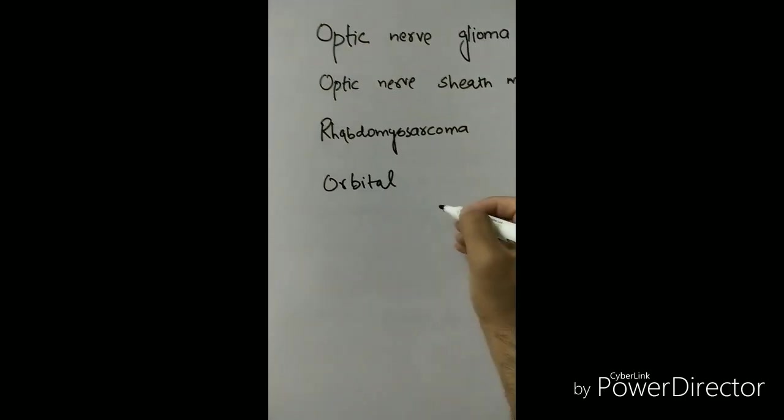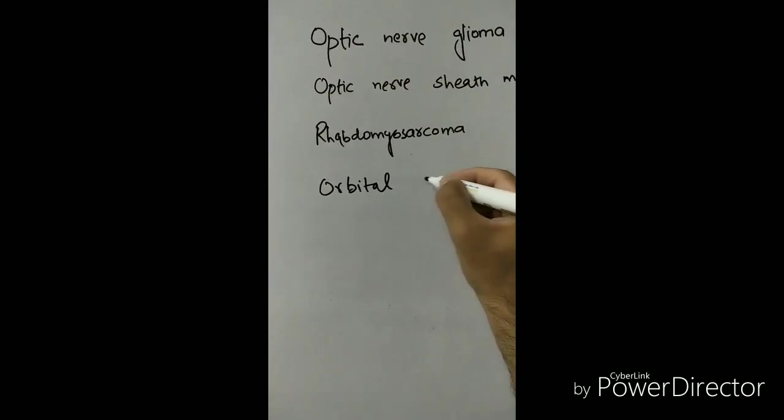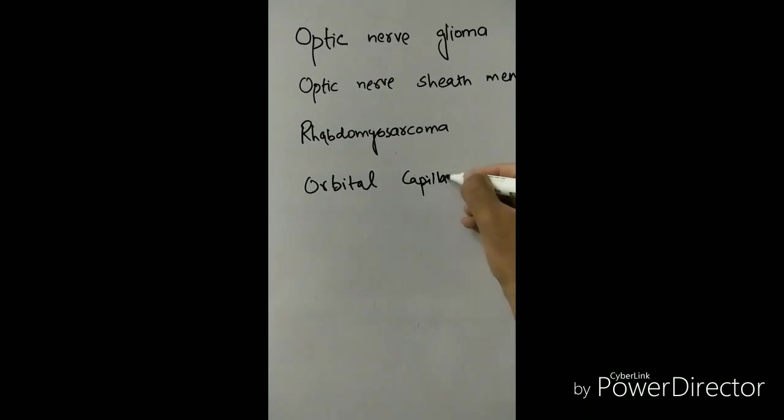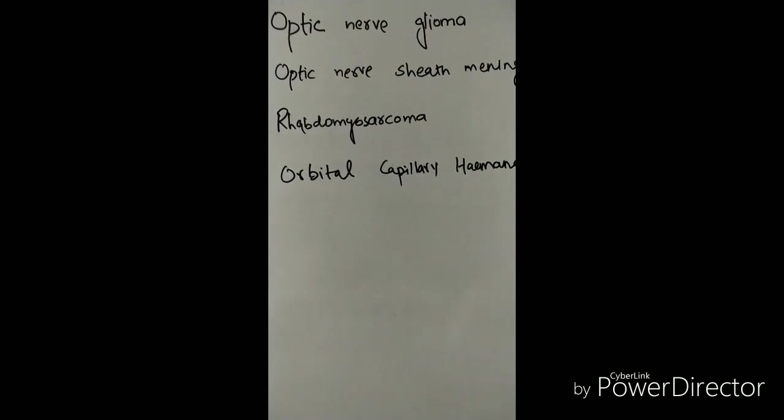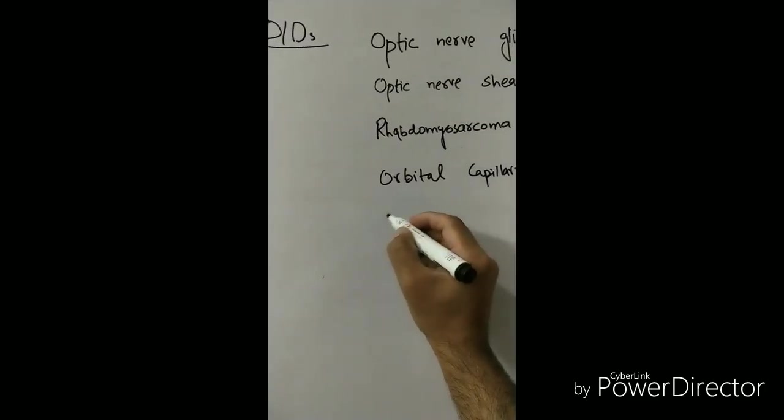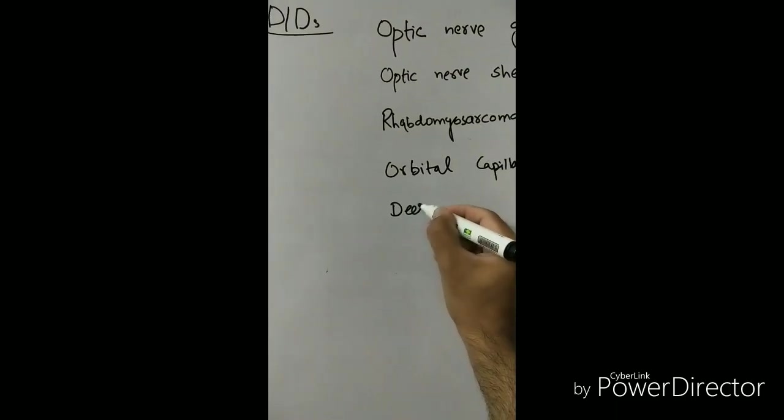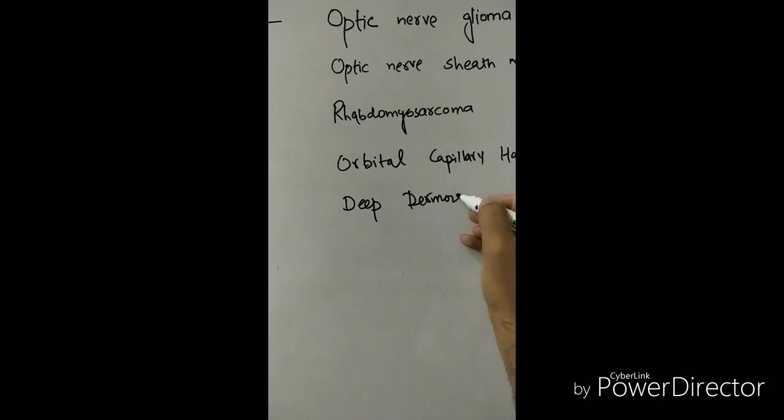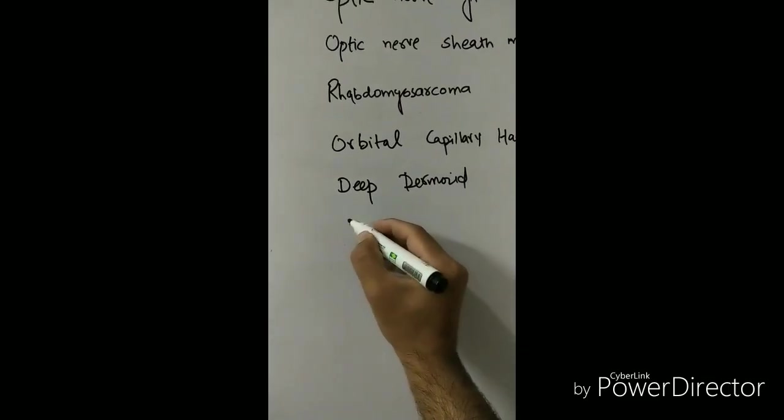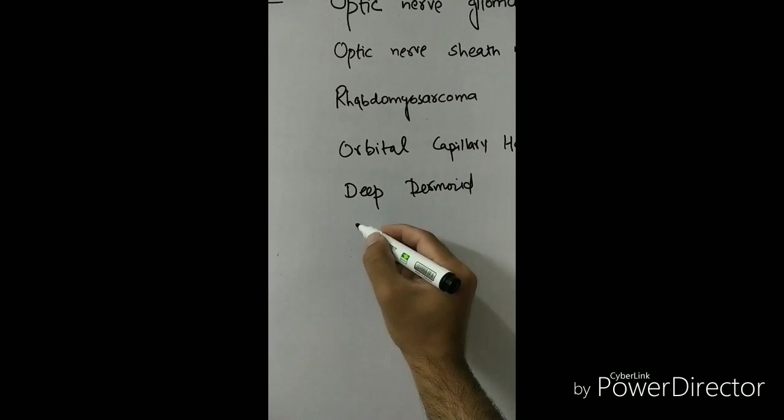And what are the other features? The other features are along with proptosis there is optic disc swelling initially and atrophy later on and then decrease of vision. Then in optic nerve sheath meningioma it has also same symptoms, decrease vision, proptosis, and disc swelling and then atrophy.